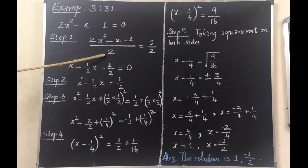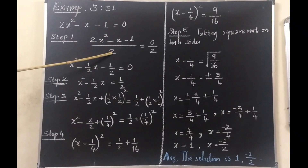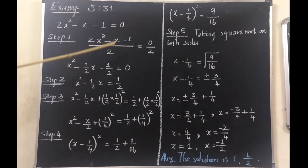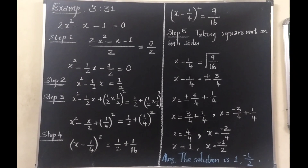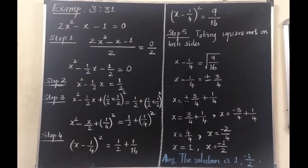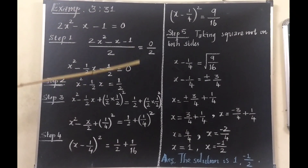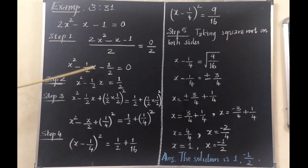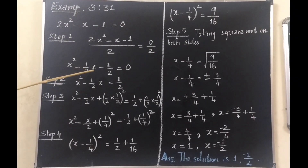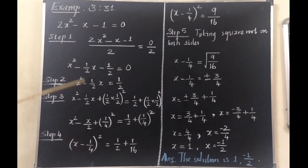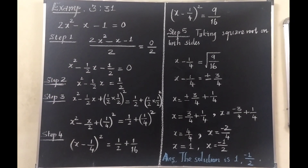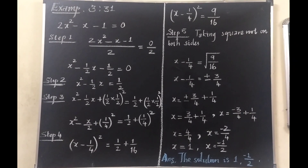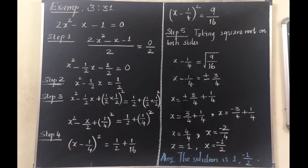When we divide by 2: 2x squared by 2 becomes x squared; minus x by 2 gives minus (1/2)x; the constant gives minus 1/2; and 0 by 2 equals 0. So the equation becomes x squared minus (1/2)x minus 1/2 equals 0. In step 2, we take the constant term to the right hand side — minus 1/2 goes there as plus 1/2. In step 3 we add the square of half of the coefficient of x on both sides of the equation.